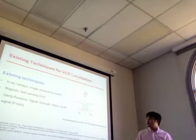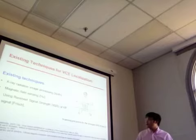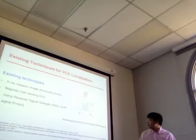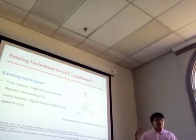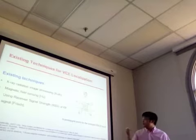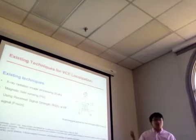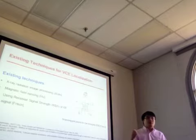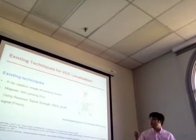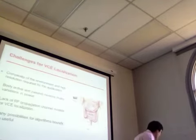Therefore, the magnetic method is also not ideal. The current system scans grid points on the body surface and tries to localize the video capsule by finding the grid point with the strongest received signal strength. The problem with this technology is that the accuracy does not satisfy physicians, who require centimeter-level localization accuracy.